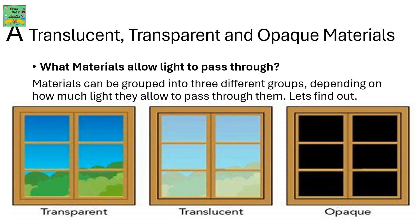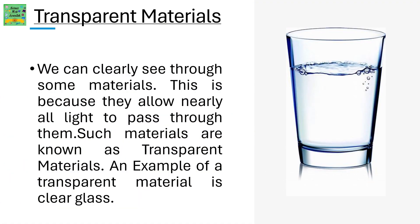The first group is transparent, the second is translucent, and the third is opaque. Transparent materials: we can clearly see through some materials because they allow nearly all the light to pass through them. Such materials are known as transparent materials. An example of a transparent material is clear glass.